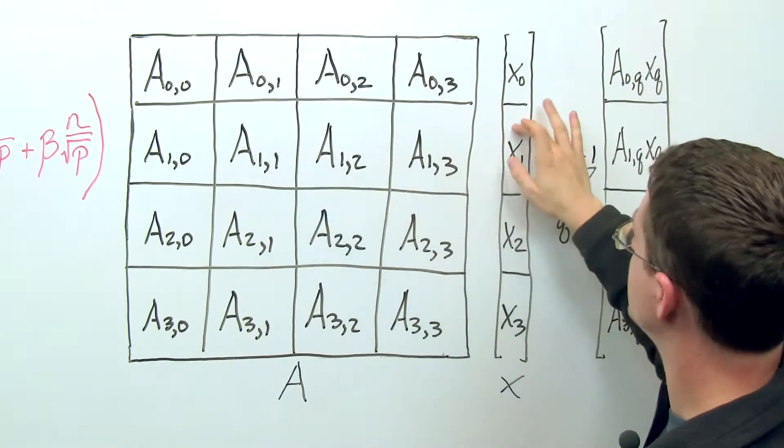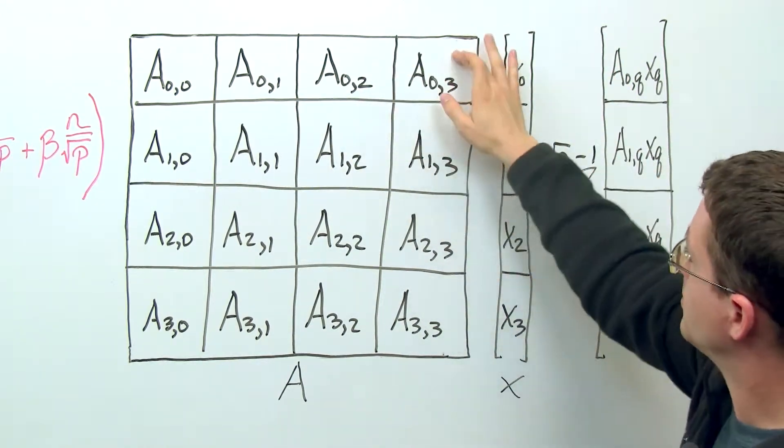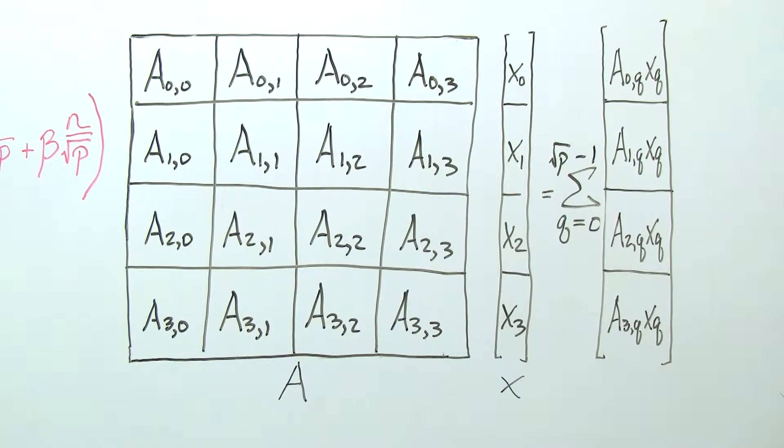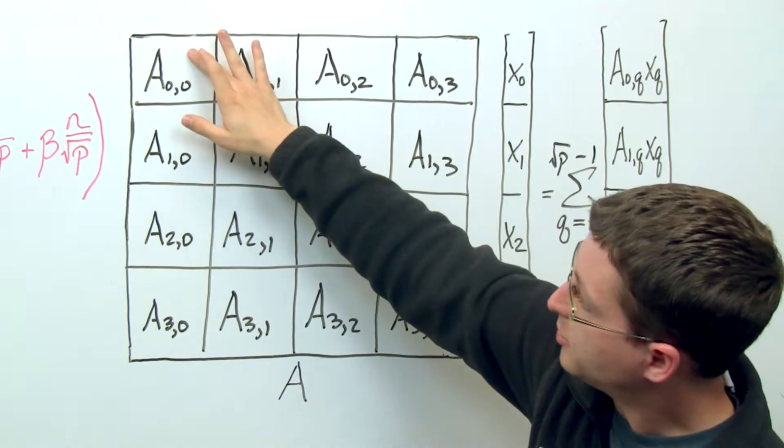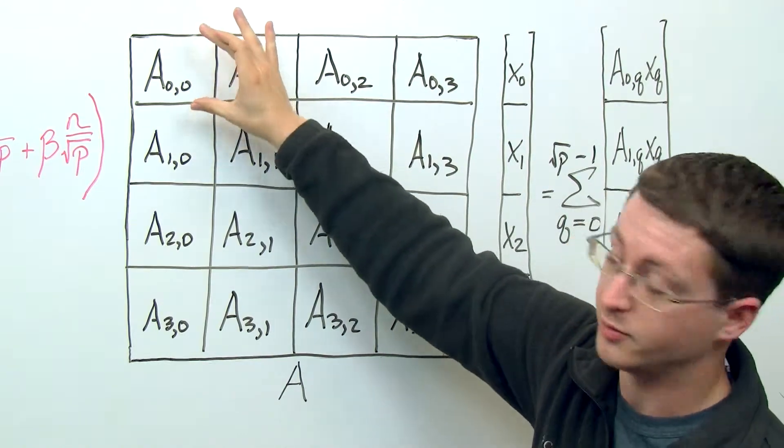We need to multiply this top left quadrant of this top left portion of A times the first portion of x, and then each of these pieces times the corresponding pieces of x. So if our process is the one in the top left, then it only owns this portion of the matrix A.